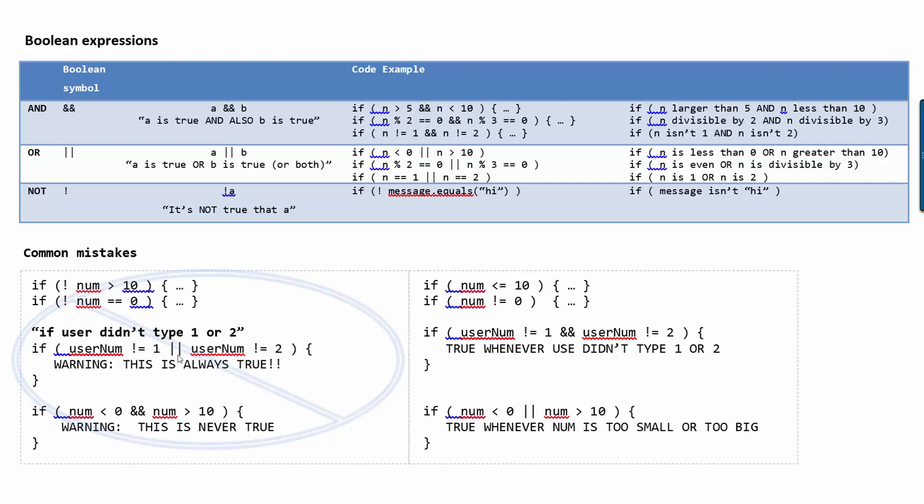Let's imagine, let's say that user num equals 1. In that case, we ask, is it true that user num not equal to 1? That's false. But then here we ask, is user num not equal to 2? Well, that's true because user num is 1. And for an or, all it takes is one of these to be true for the entire expression to be true.